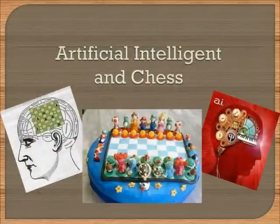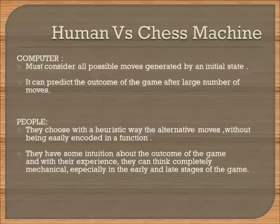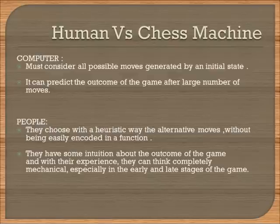Now we are going to talk about the connection between artificial intelligence and chess. The computer must consider all possible moves generated by an initial state, and has the ability to predict the outcome of the game after a large number of moves. People choose alternative moves in a heuristic way without being easily encoded in a function. They also have some intuition about the outcome of the game, and with their experience, they can think completely mechanically, especially in the early and late stages of the game.